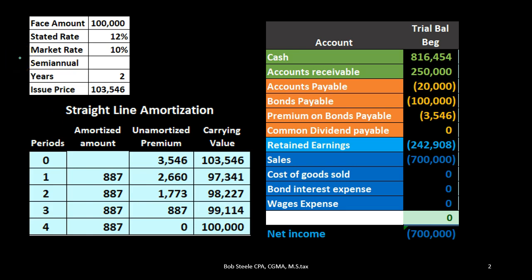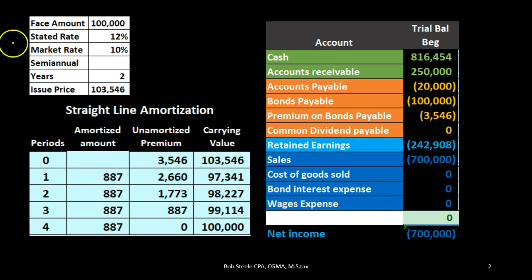Our bond information: the face amount is $100,000 and the stated rate is 12% — that's what's actually on the bond. The market rate is 10%, and since the stated rate is greater than the market rate, we're going to have a premium. We issued the bond at $103,546, so the difference of $3,546 is the premium. It's a two-year bond with semi-annual payments, giving us four periods.